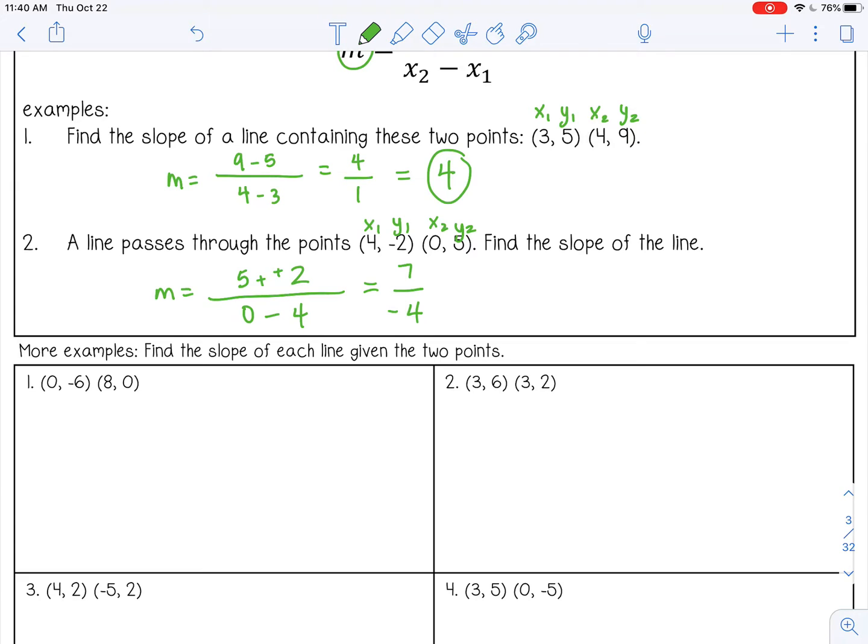So 5 plus 2, that's 7. 0 minus 4 is negative 4. Now for slope, you can leave it as an improper fraction. That's fine. It's actually easier to graph when you leave it as an improper fraction instead of trying to change it to a mixed number or a decimal. So we're just going to leave it. We can't reduce that any. And we're just going to put that negative out front because 7 divided by a negative 4, that's the same thing as negative 7 over 4. And that negative is important because that tells us the slope is falling. So the graph looks like that. It's falling from left to right.